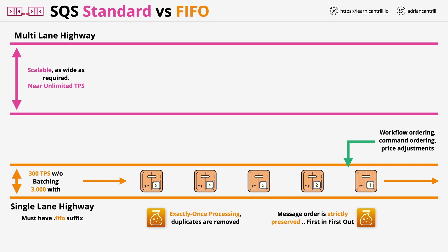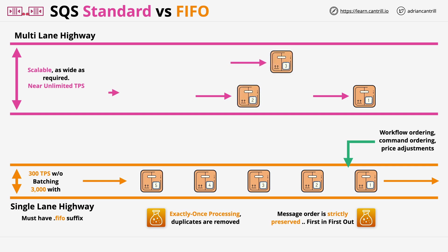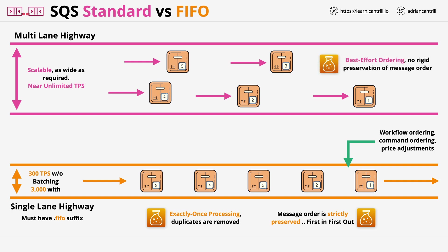Standard queues — the multi-lane highways of queues — are faster. Think of this as multiple messages being carried on the highway at the same time. But because of this, there are a few important trade-offs. First, there's no rigid preservation of message ordering — it's best efforts only. Second, what's guaranteed is only at-least-once message delivery, meaning messages can be delivered more than once. Applications using standard queues need to accommodate the potential for duplicate message delivery.